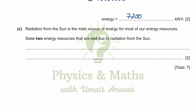Radiation from the sun is the main source of energy for most of our energy resources. State two energy resources that are not due to radiation from the sun. The first example is nuclear energy, which is not due to radiation from the sun. The second is geothermal energy, which is also not due to radiation from the sun.